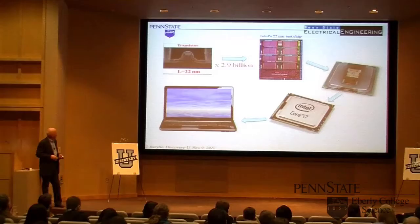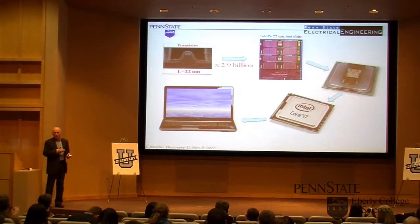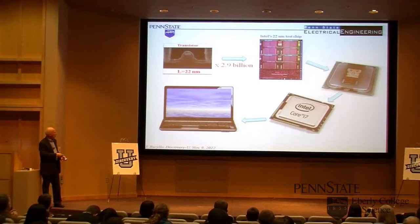You improve the transistor, shorten the gate, make it work faster, then take three billion of those and put them into one chip — for instance, a Core i7 Intel chip. Package it and put it into your laptop and suddenly your games run faster, video streams without difficulty, you browse the internet with no delay whatsoever. That's basically what was driving technology and what got us to this nanotechnology regime.